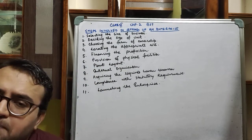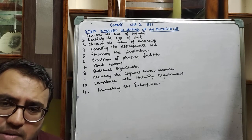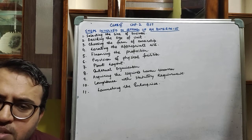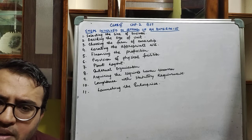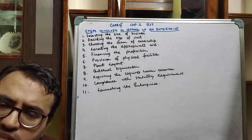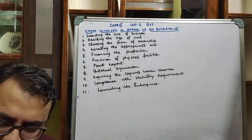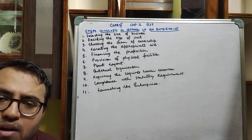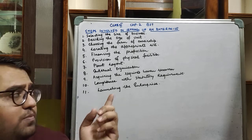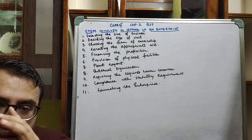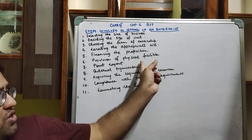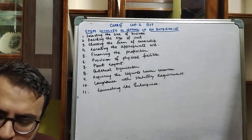Moving to the next point — financing the proposition means financing the business. A person cannot always have a huge amount of funds on their own, so they can take financial assistance from others. Financing can be done through different forms such as sole trader, partnership, or joint stock company structures.